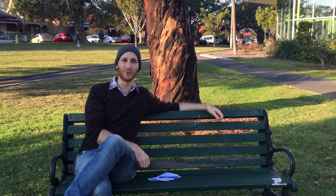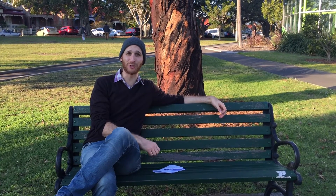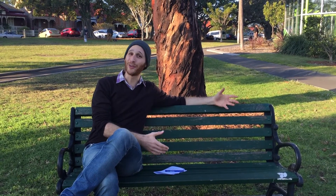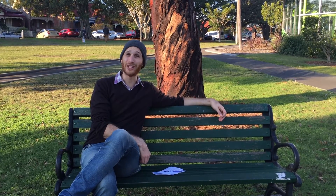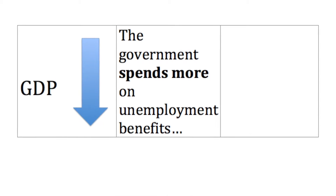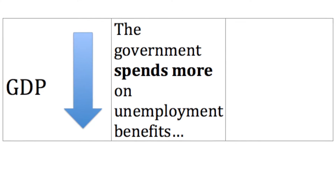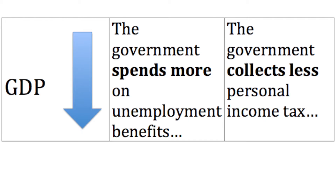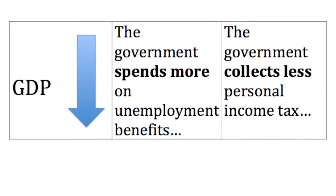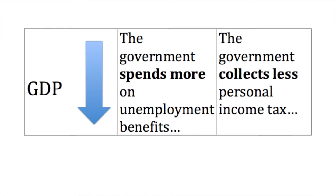Now let's flip the example. The economy is slowing: GDP declines, unemployment increases, and people's incomes generally fall. It's not such a great time — you might be out of a job, and you've probably got less income in your pocket. Here, a couple of things happen automatically. The government automatically spends more on unemployment benefits, because more people are out of work. The government automatically collects less personal income tax, as unemployment increases and people generally earn less.